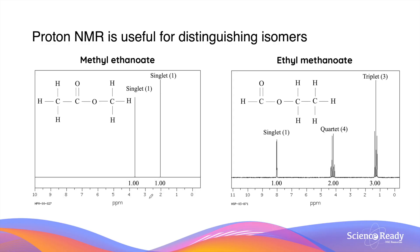However, in this particular situation, proton NMR can be easily used to distinguish between the two isomers of esters. This is because in methyl ethanoate, there are only two proton chemical environments, which gives rise to two signals in the proton NMR spectrum.